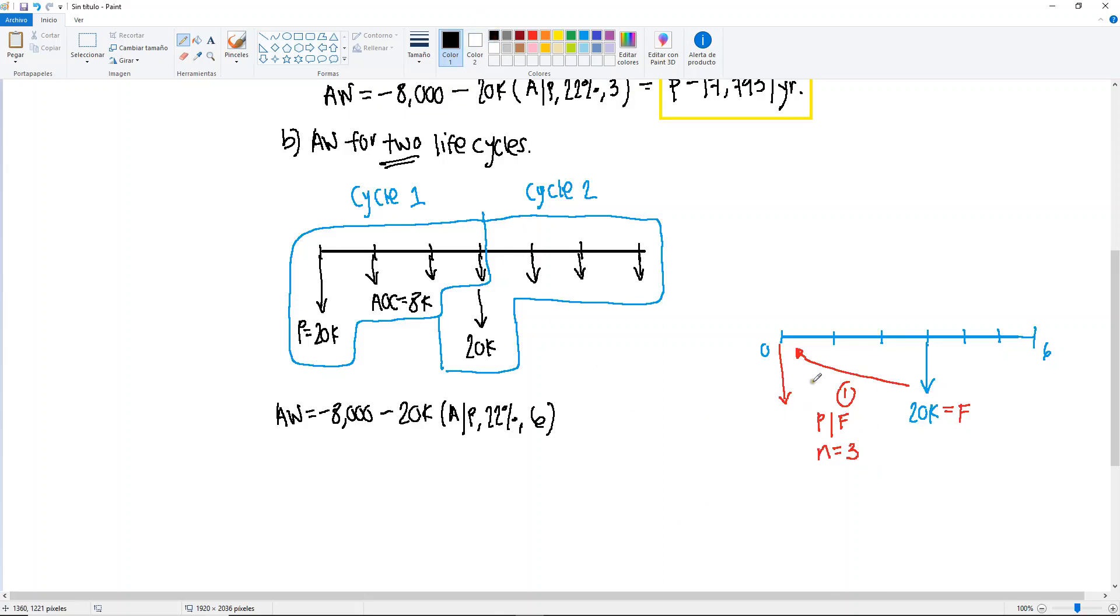Let's include this first step into our equation. So we have the minus 20,000, find P, give an F, at 22% for N of three. Whichever value you find, it's going to be this arrow right here.